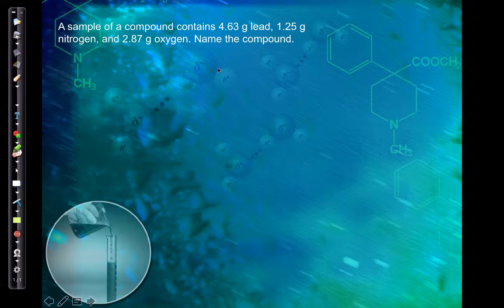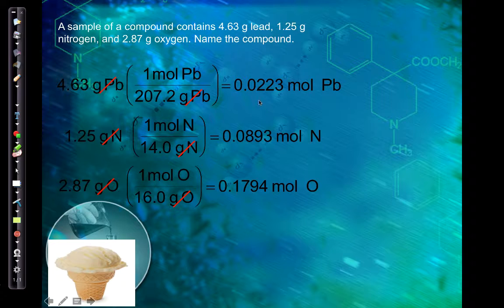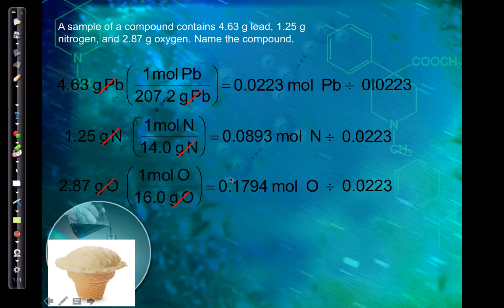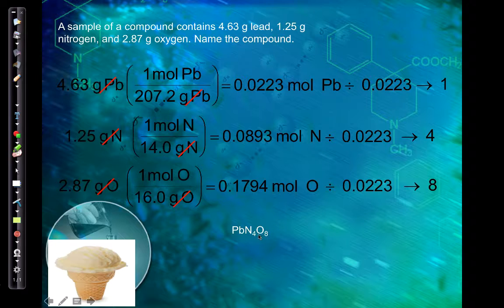Here we're given masses directly, so convert straight to moles. After dividing by the smallest value (0.02), we get the ratio. The compound contains a metal and more than two elements, indicating a polyatomic ion. It contains nitrogen and oxygen — either nitrite (NO₂) or nitrate (NO₃). Since the nitrogen-to-oxygen ratio is 1:2, it has to be the nitrite.